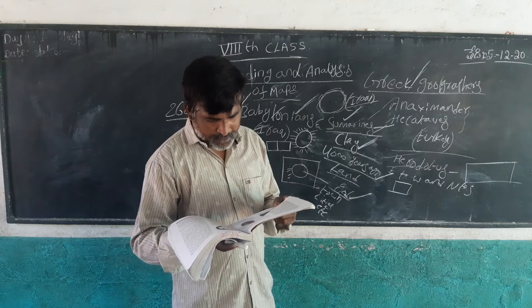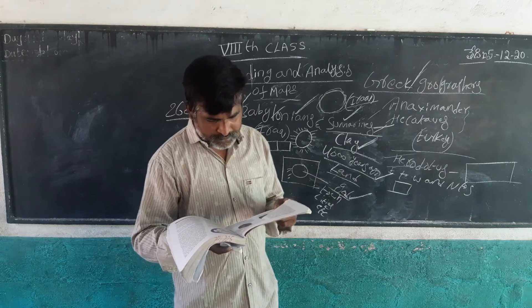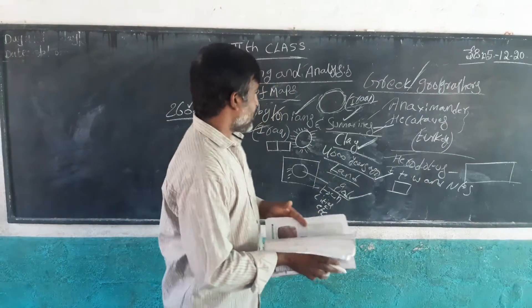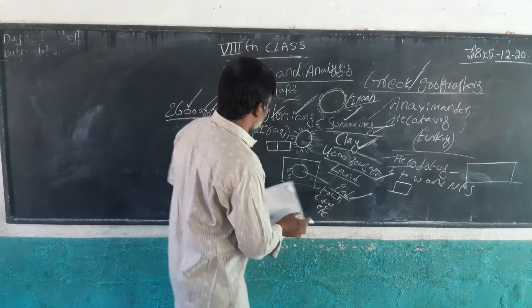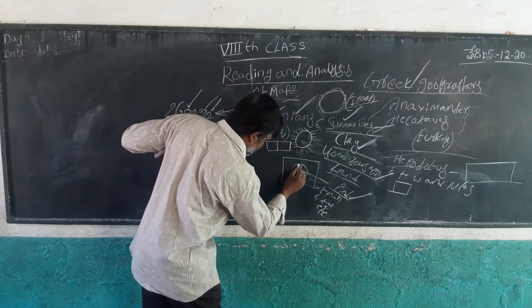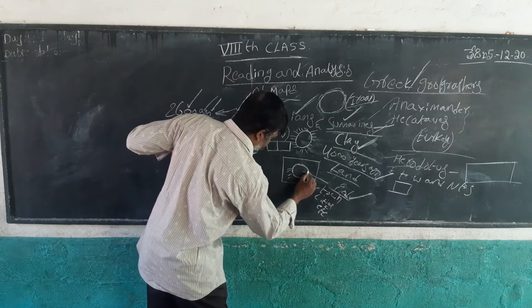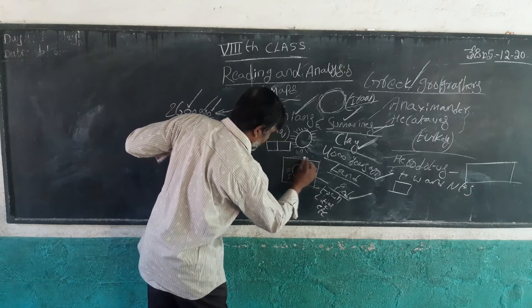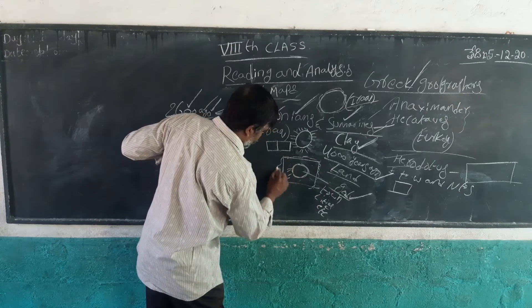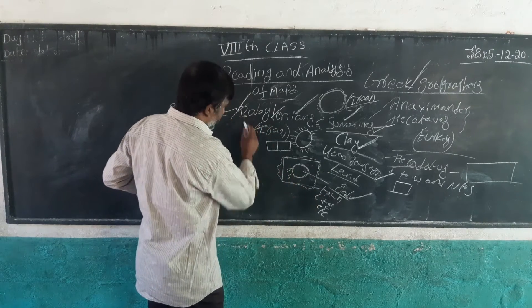The Babylonians all believed that the earth was a round disc, surrounded by ocean water. The earth is a round disc shape, and the outer circle is created by the ocean.